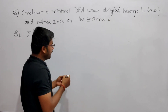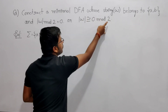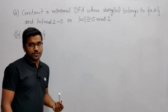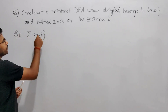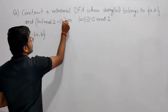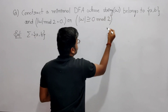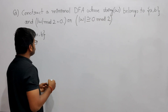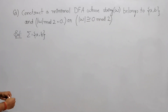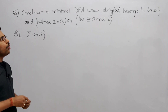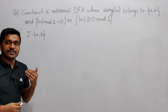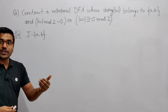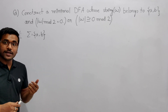Both representations are the same — it means the length of the string when you divide by 2 you should get remainder as 0. So don't get confused if they use these two representations; they are the same. Your sigma is {a, b} and they are saying construct a minimal DFA whose strings belong to {a, b} and whose length when divided by 2 gives remainder 0.